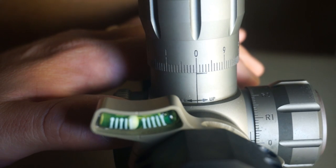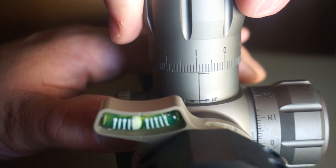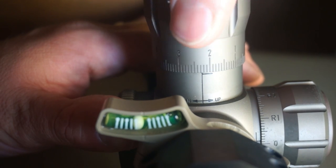The subtensions on your reticle should match your turrets. If you look at the turrets on my Bushnell ERS, you'll see that they're numbered 1 through 10. For every revolution on the turret, I'm adjusting the scope 10 mils in 1 tenth mil increments.